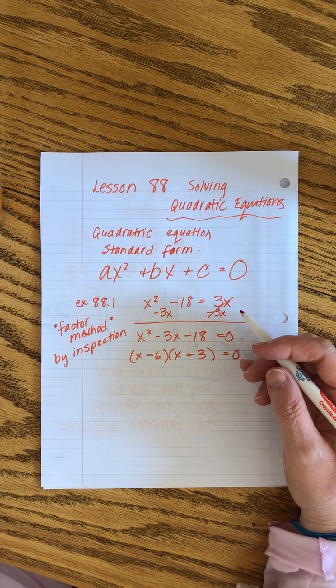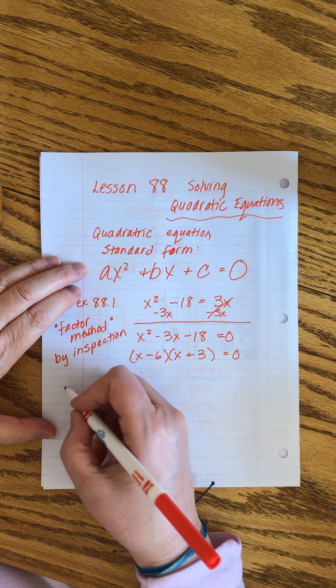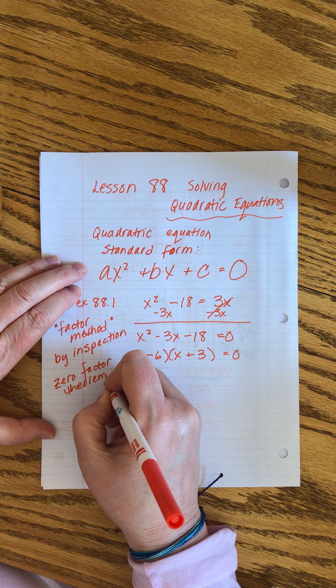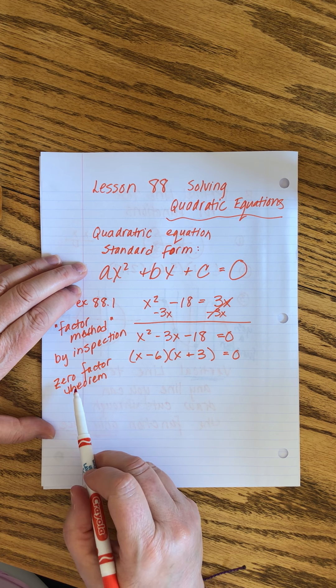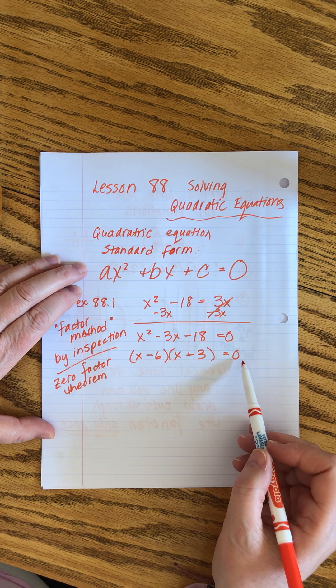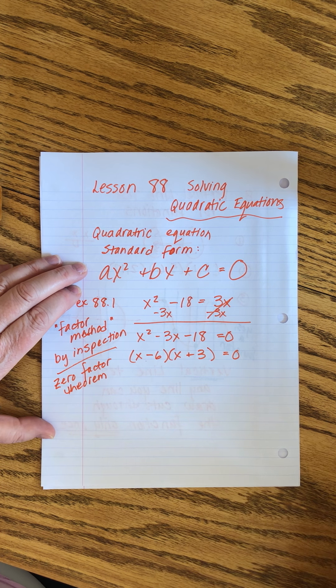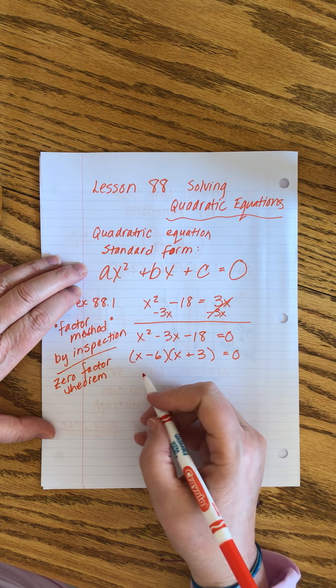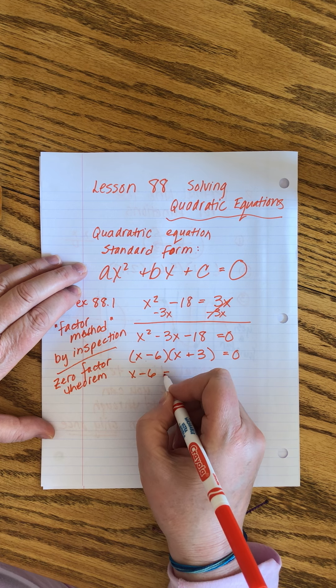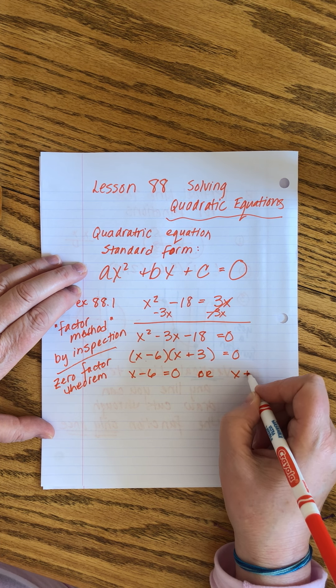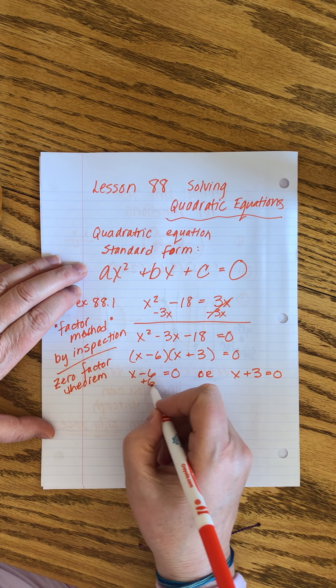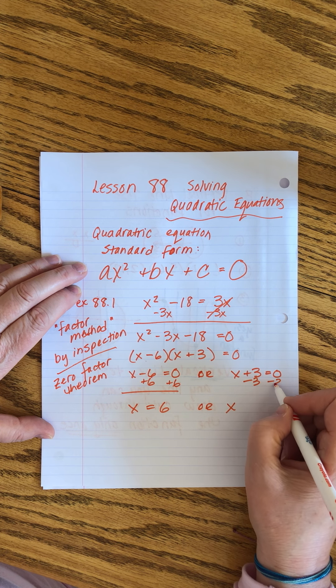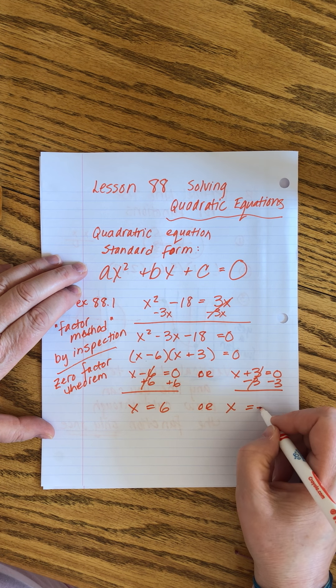Now we have our old friend that we call the zero factor theorem. If two numbers multiply to give you zero, then either the first one is zero or the second one is zero. At this point, we know that either x minus 6 equals zero or x plus 3 equals zero. And then we can quickly get x equals 6 or x equals minus 3.